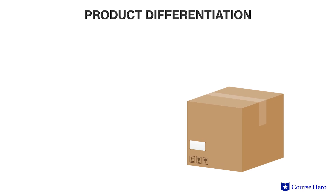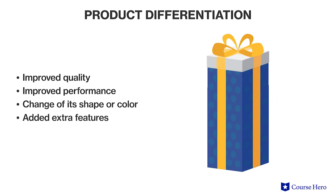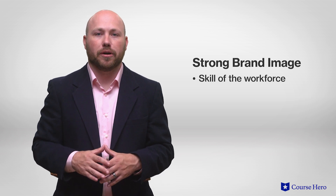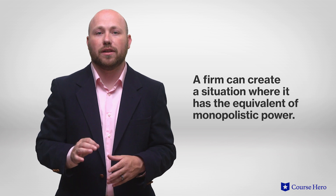Firms seek to distinguish their product from competitors' by product differentiation aimed at securing brand loyalty. The product itself can be differentiated by improving quality or performance, changing its shape and color, or adding extra features. Even when the product is almost indistinguishable from competing products, it can be differentiated by distinctive packaging. A manufacturer may develop a strong brand image based on the skill of its workforce, created by recruitment and training programs, and supported by quality control systems so consumers trust its products. All these forms of product differentiation are emphasized through advertising. To the extent a firm can convince consumers that its product is superior and distinct from potential substitutes, it creates the equivalent of monopolistic power.